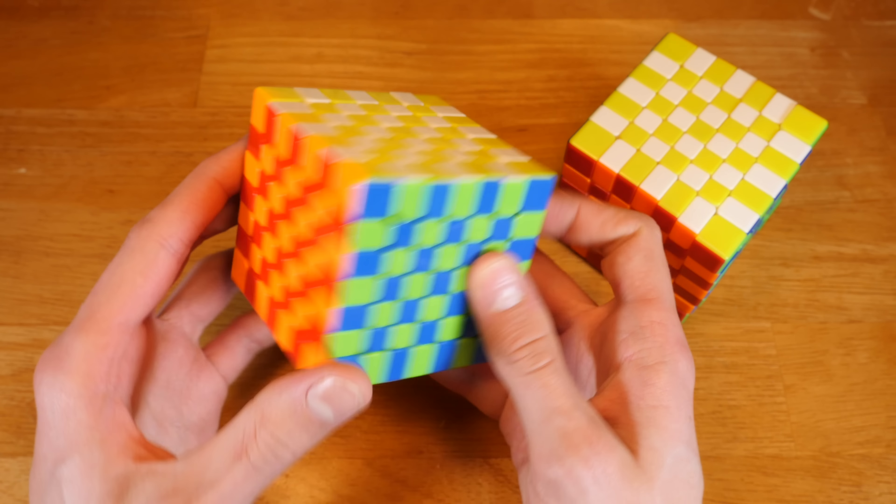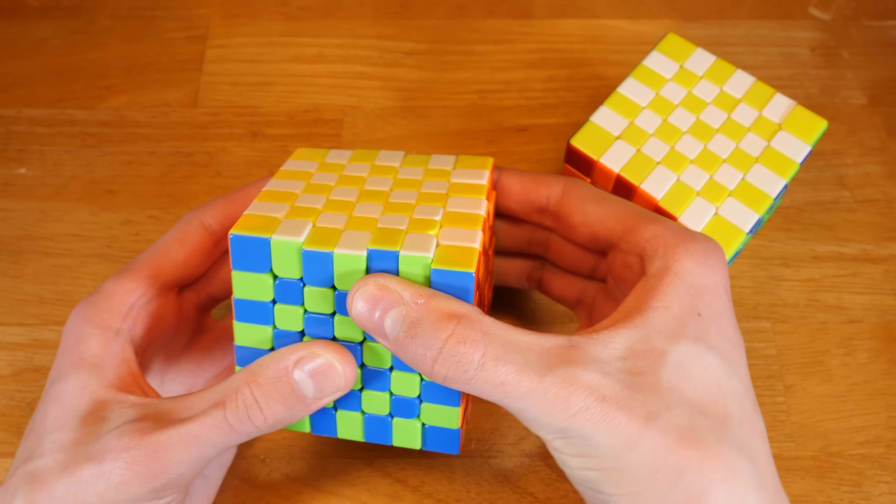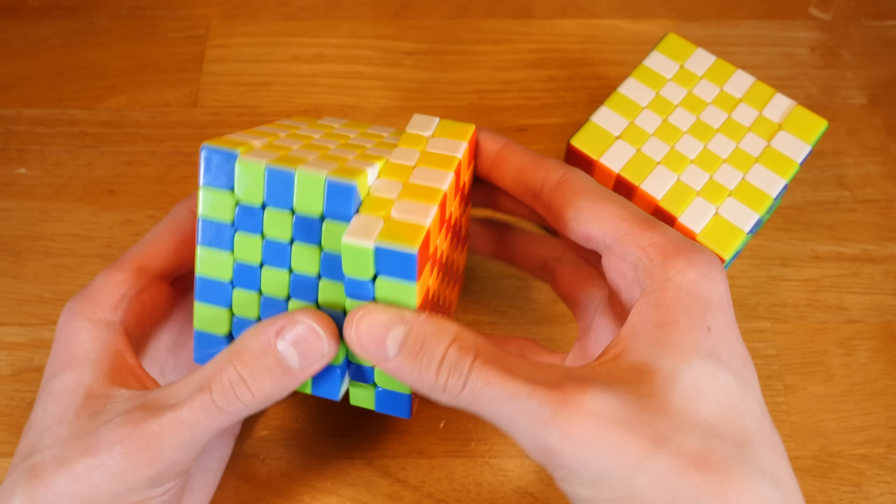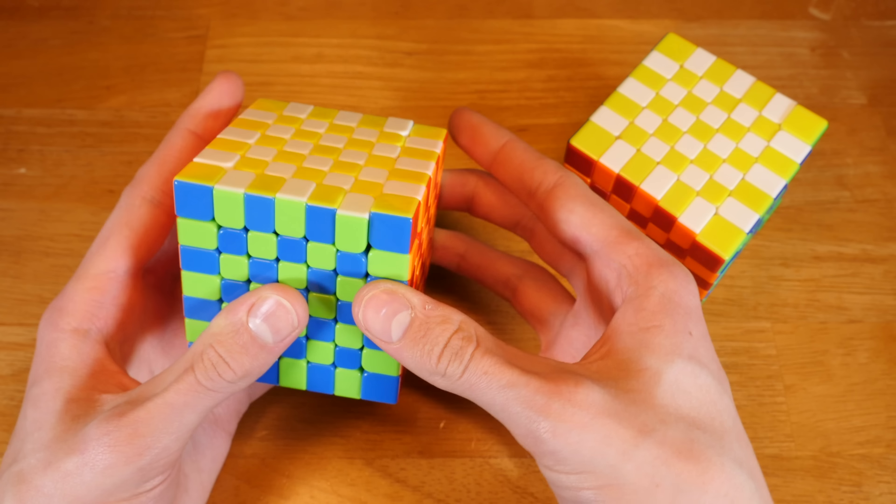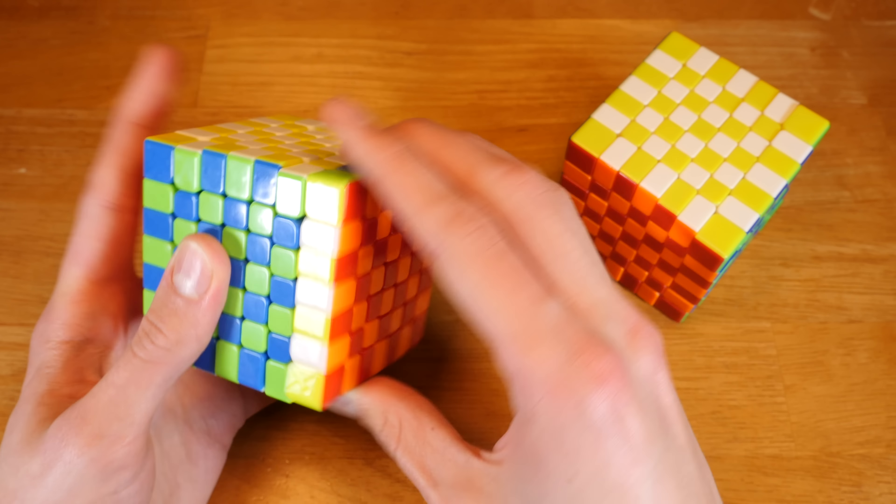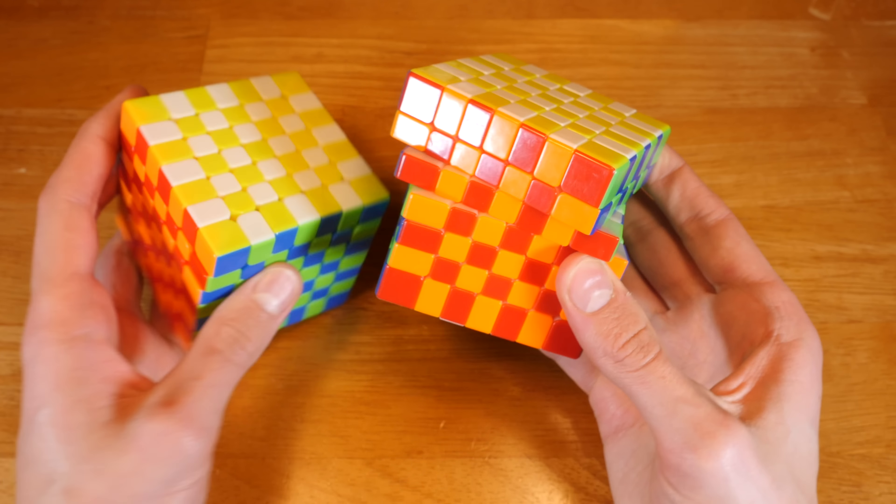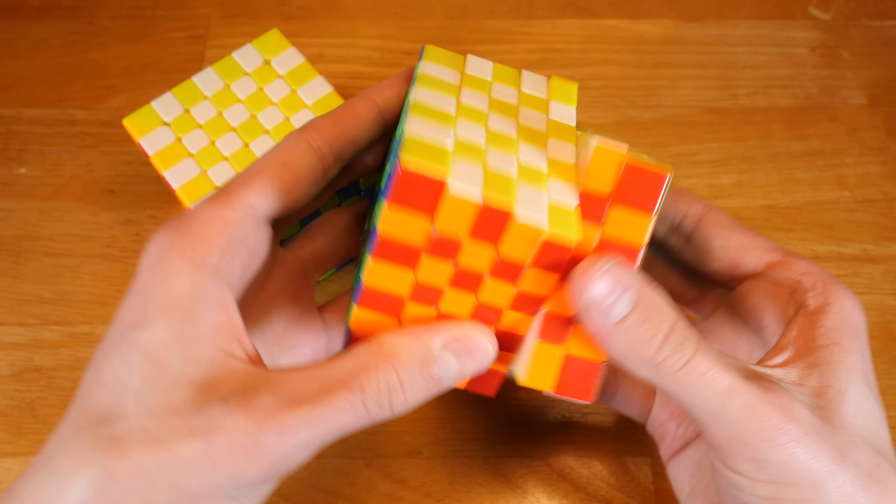It does not suffer from these terrible lockups. It still does get catches every once in a while when you're turning. That is just how 7x7s are still, so that is going to be an issue on both of these cubes. But when it comes to very annoying lockups, the ChiChi wins, no question.